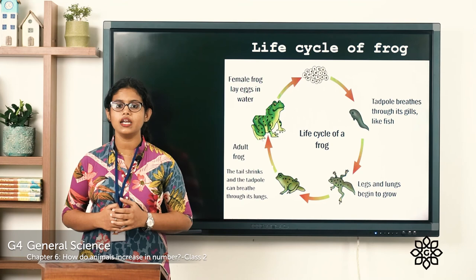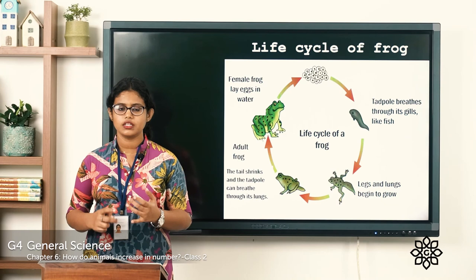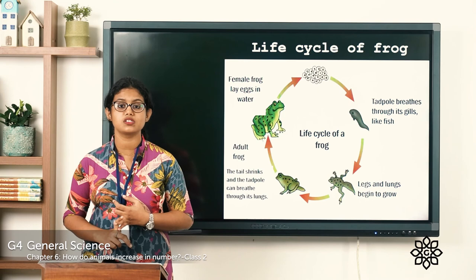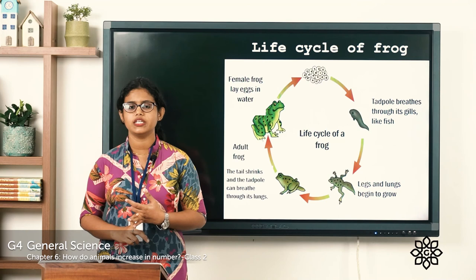I hope you all understood this topic — the life cycle of a butterfly and the life cycle of a frog. Animals reproduce in two ways: by laying eggs as well as by giving birth to young ones. Let's meet in the next class with a new topic. Thank you.